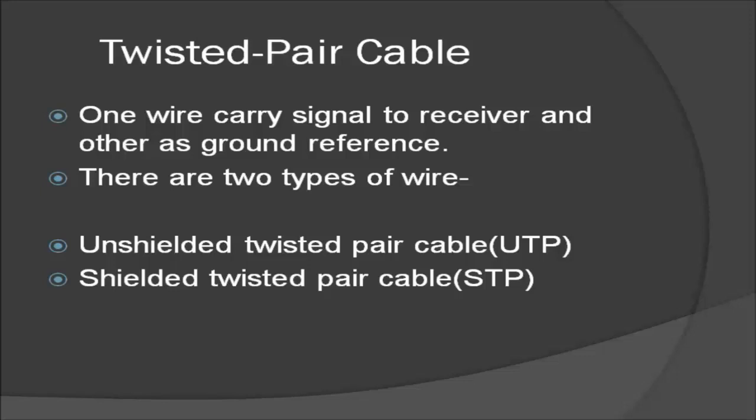Now suppose if one wire is close to the noise source, then the other one comes next close to the noise source. Twisting makes it probable that both wires are equally affected by external influences like noise. This means that the receiver, which calculates the difference between the two, receives no unwanted signal, and so unwanted signals are almost removed.